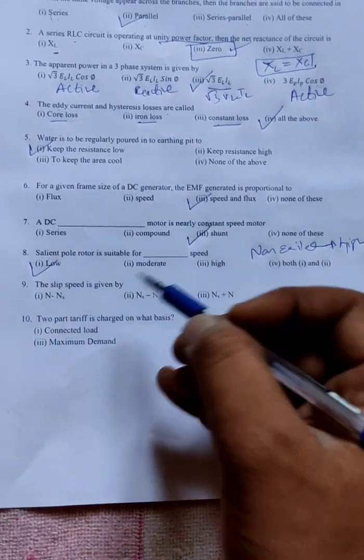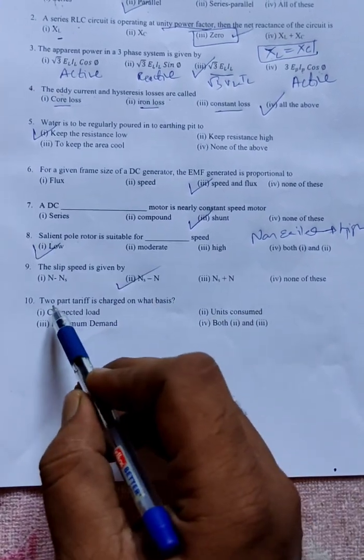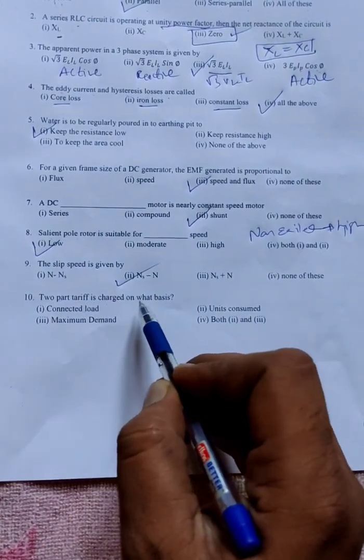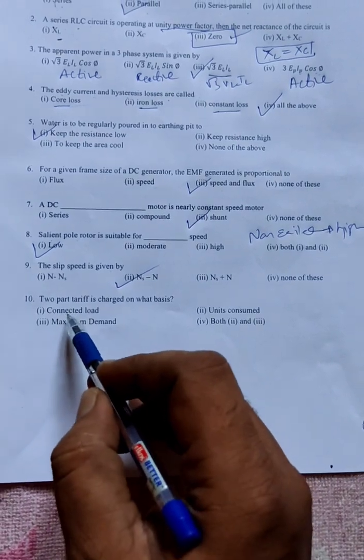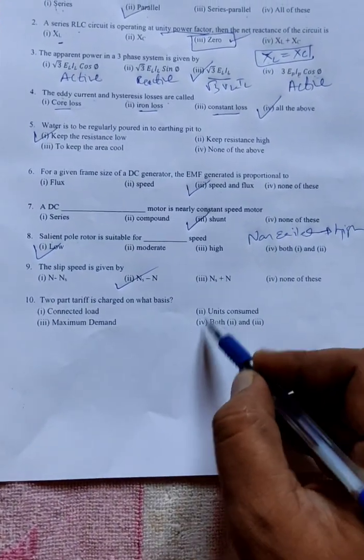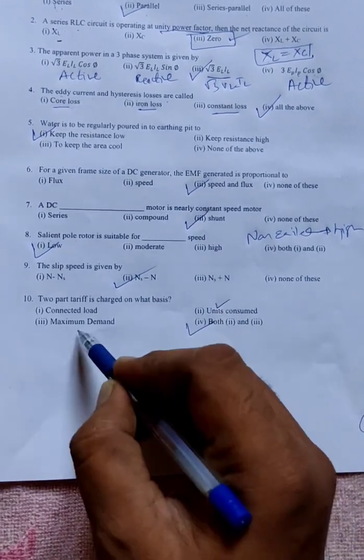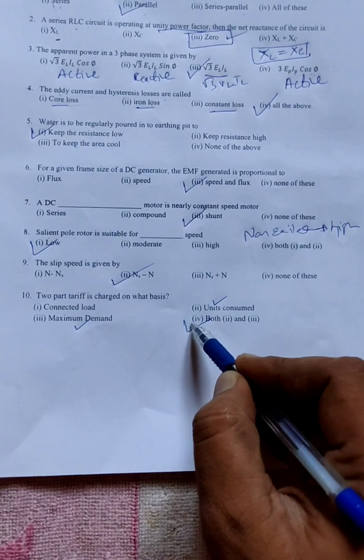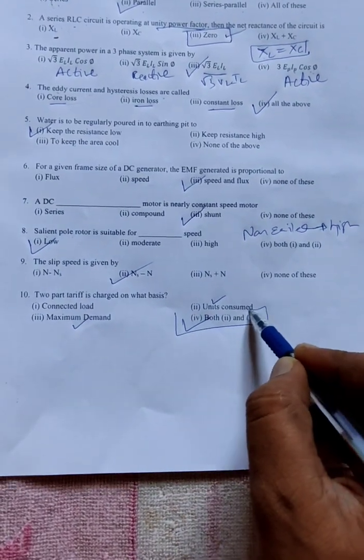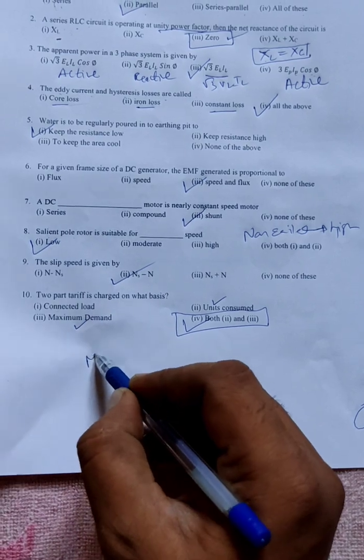The slip is given by Ns minus N. Two-part tariff is charged on what basis? Connected load, unit consumed, maximum demand. So the correct option is both two and three. They've given the last option: both two and three.